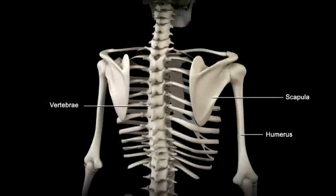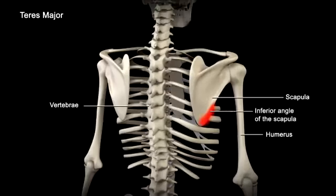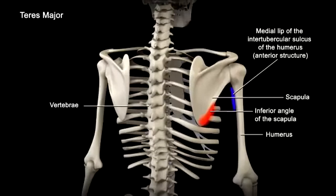Opposing the flexor muscles are the shoulder extensor muscles, which are primarily the teres major and latissimus dorsi. The teres major muscle originates on the inferior angle of the scapula and inserts on the medial lip of the intertubercular sulcus of the humerus.